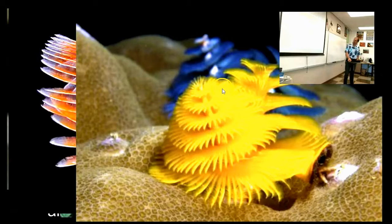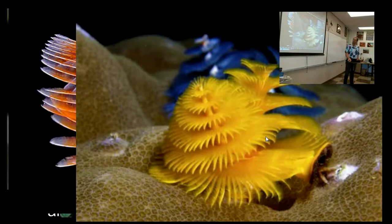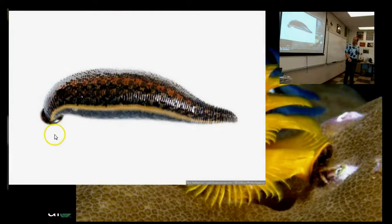Some of them are called Christmas tree worms because their gills look sort of like Christmas trees. If you touch them, they pull them in immediately. And of course, leeches are the one parasitic group of annelids.